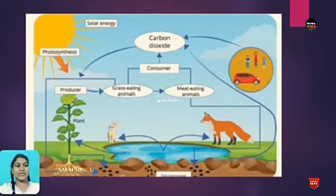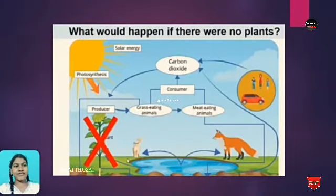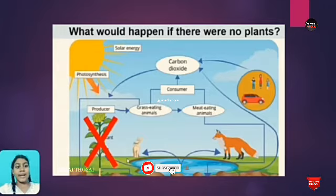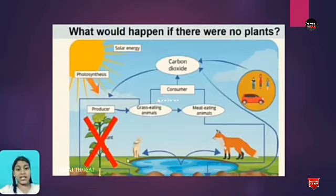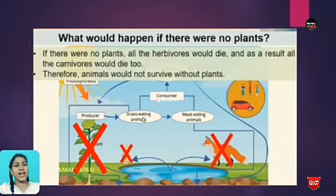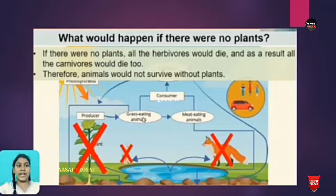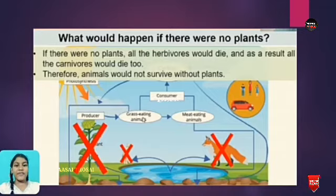Observe this picture. What would happen if there were no plants? The grass-eating animals would not survive, and as a result, the meat-eating animals would not survive either. If there were no plants, all the herbivores would die, and as a result all the carnivores would die too. Therefore, animals would not survive without plants.